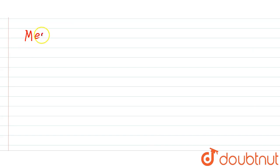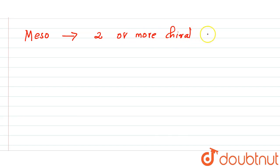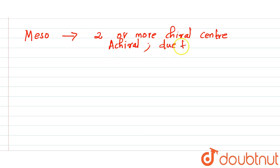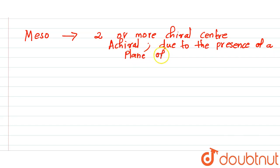Among those compounds we have to find the compound which will show the meso isomer. We know that in meso compounds, there are two or more chiral centers present in the compound, but the compound is achiral due to the presence of a plane of symmetry. So meso isomers have a plane of symmetry, hence they are achiral, meaning optically inactive.